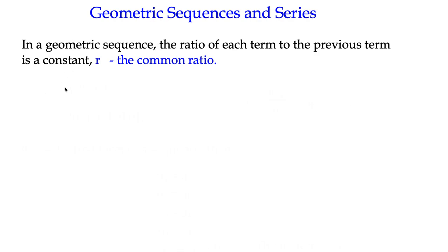So in a geometric sequence, the ratio of each term to the previous term is a constant. In other words, if we divide one term by the one before it, we get r, the common ratio.